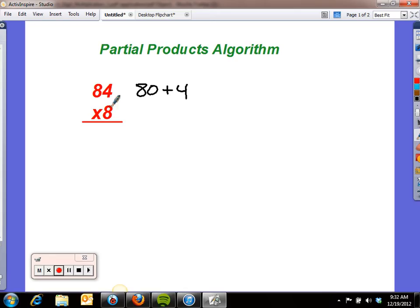So we have 8 times 4. I can continue to write my problem like this. So I would start with 8 times 4. 8 times 4 is 32, and I write the whole 32 down here at the bottom underneath the line.